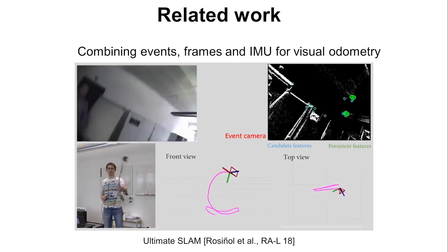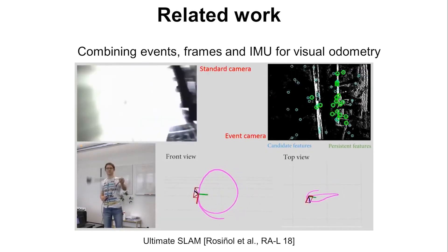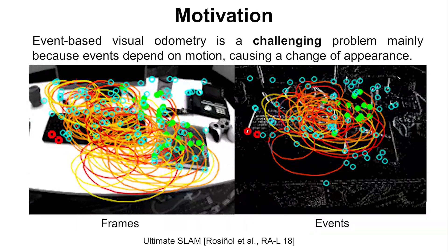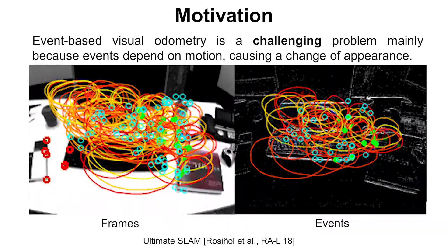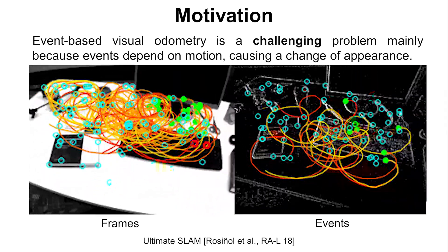We also seek to get the best of both visual sensors for SLAM-related tasks. Event-based visual odometry is a challenging problem mainly because events depend on motion, causing a change of appearance.